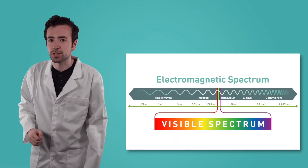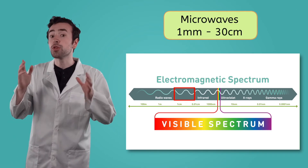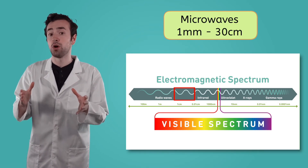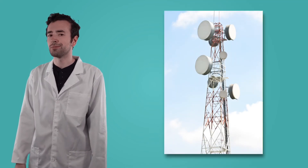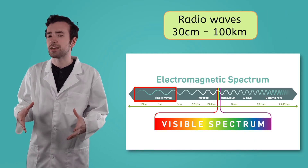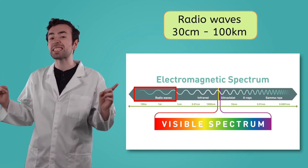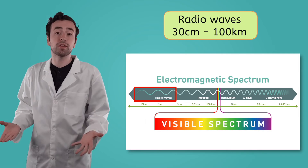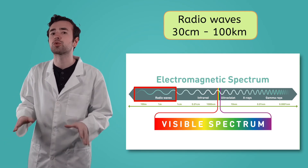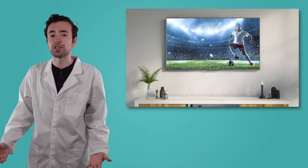Even longer wavelengths of light are called microwaves. Microwaves range from 1 millimeter to 30 centimeters, or about a foot long. Microwaves are used for communication, navigation, astronomy, and, yes, heating food in your kitchen. Even longer than microwaves are radio waves, which can extend from 30 centimeters to 100 kilometers, or more than 60 miles long. The long length of these waves allows us to send information over extremely long distances, making them very useful for things like radio, television, and satellite communication.